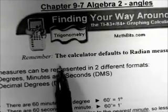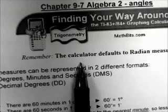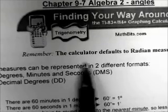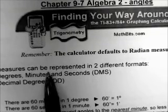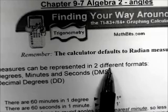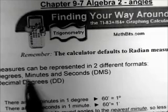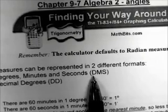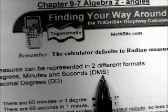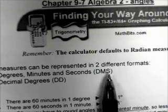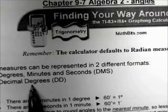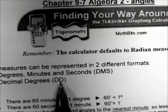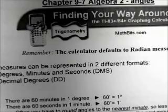Remember, the default mode on the calculator is in radians measure. Angle measures can be represented in two different formats: degrees, minutes, seconds — otherwise known as DMS — or decimal degrees, DD.